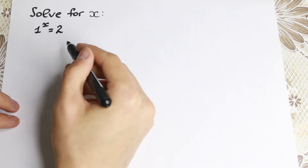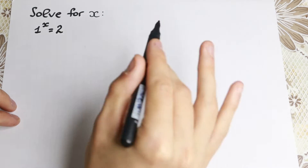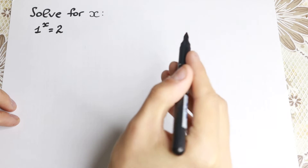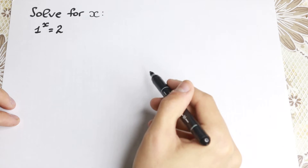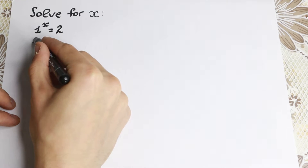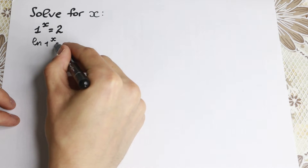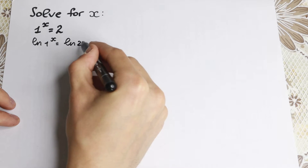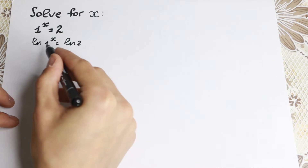But let's try to solve it step by step with different methods — maybe we'll find complex roots. Let's start with natural log, because if we have an exponent we can easily write natural log of 1 to the x on the left-hand side, equal to natural log 2.